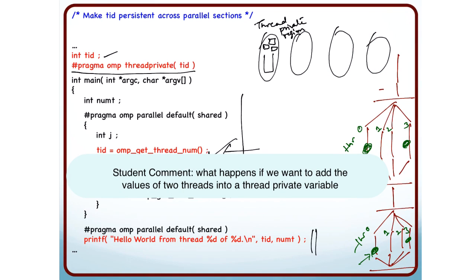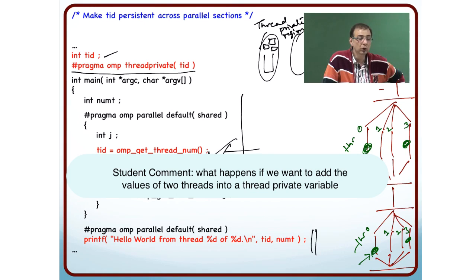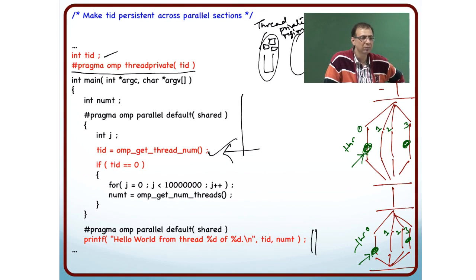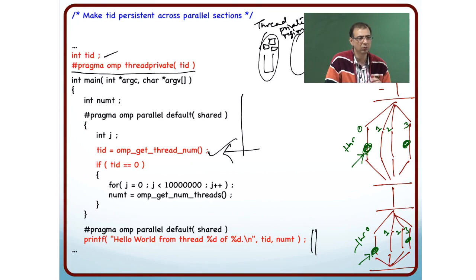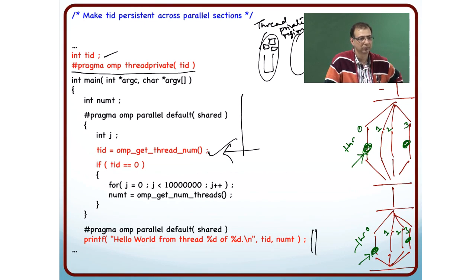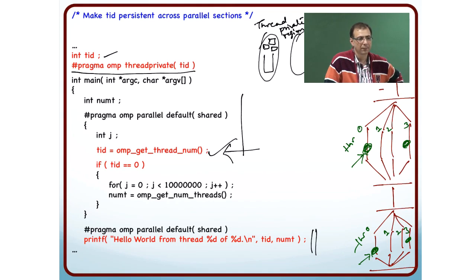The point is that you do not use thread private variables for sharing purposes; you use them for private purposes. Eventually, when you want to accumulate work across threads, you would use a shared variable for that — not a thread private variable, not a private variable, but a shared variable.